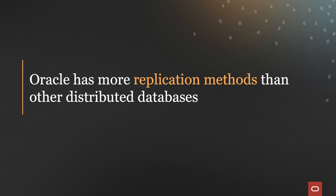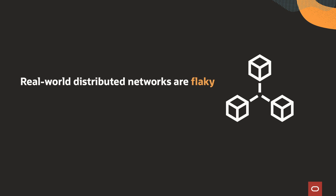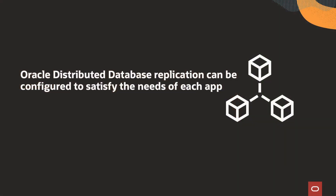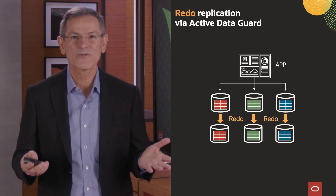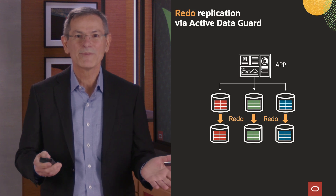In addition to more data distribution methods, Oracle also supports more replication methods than other distributed databases, and replication methods are critical for distributed databases. Oracle replication is designed for real-world networks, which are flaky — they have long latencies, intermittent slowdowns, and unpredictable stalls that can wreak havoc on application response time and availability. Oracle distributed database can be configured to satisfy the needs of each application. We support synchronous replication, asynchronous replication, adaptive synchronous replication, and a combination of local synchronous and remote asynchronous replication, both with and without a local replica. Redo replication using Active Data Guard provides the fastest performance, the most complete SQL functionality, readable replicas, and the simplest operation.